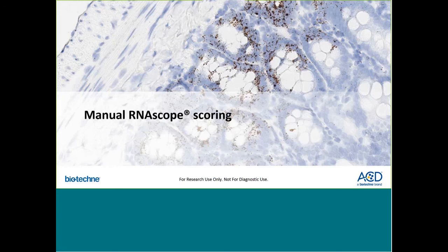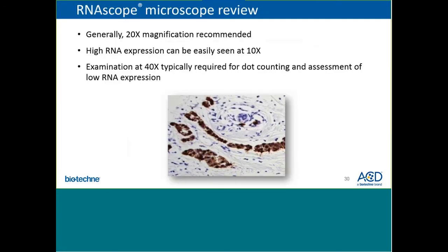I'm now going to turn my focus to manual RNAscope scoring, which includes qualitative assessments as well as semi-quantitative assessments and H-scoring. While high RNA expression in cells can be seen at 10x magnification, 4x magnification, or even very low power such as 2x, we typically recommend evaluation of RNAscope assays at about 20x magnification — which with the combination of the ocular magnification is actually 200 times magnification.